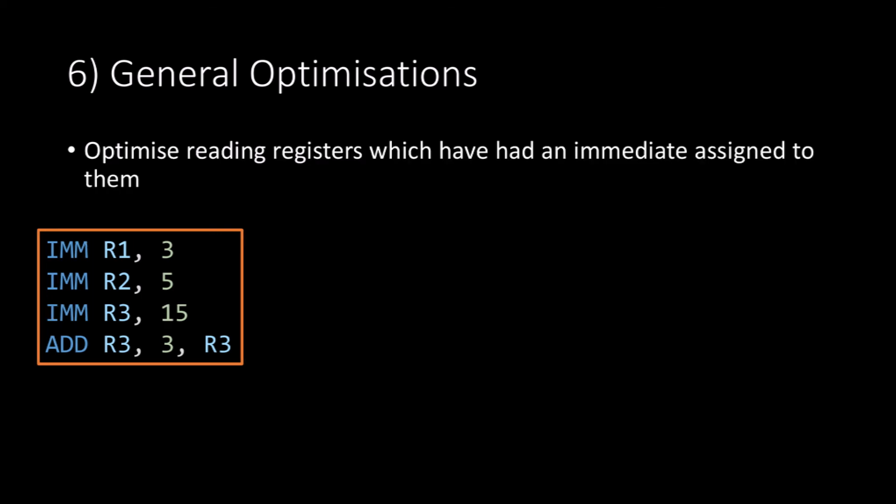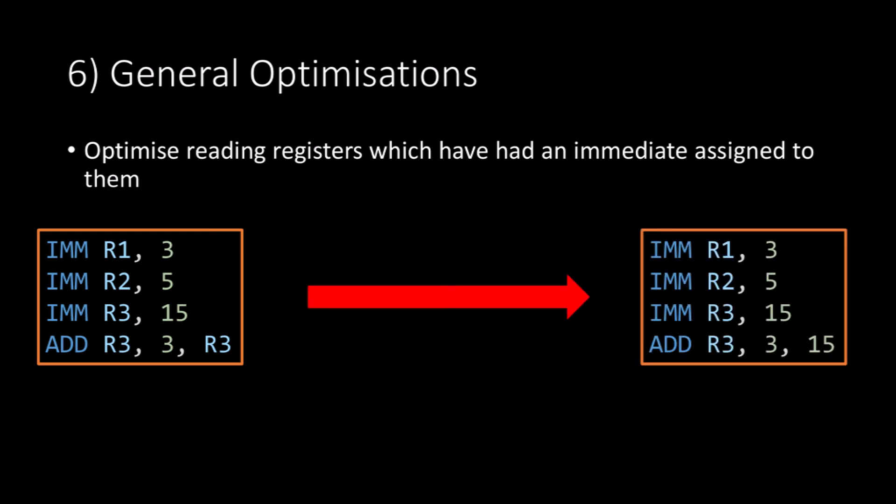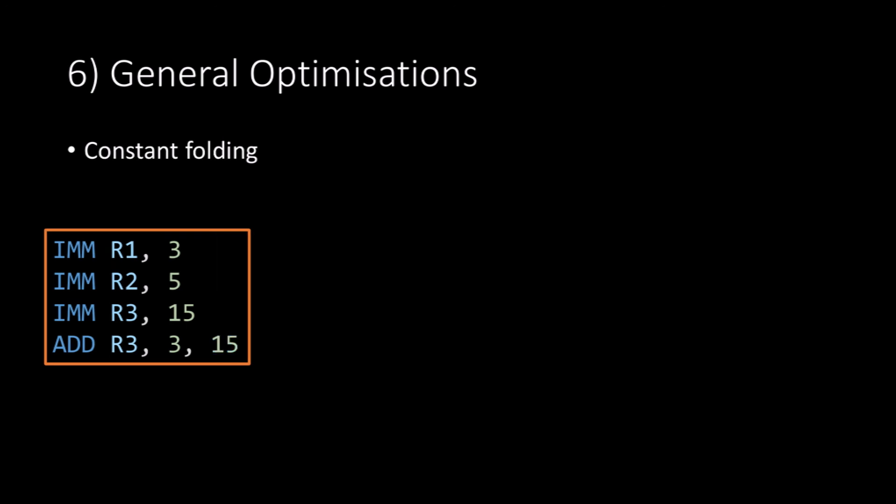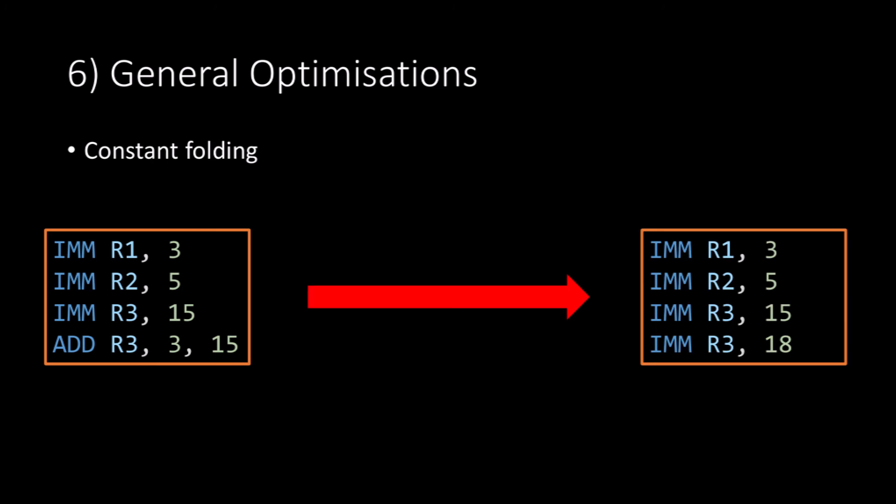Then we can apply the reading registers which have had an immediate assigned to them optimization again, and this gives us code where we've replaced reading register 3 with the immediate value of 15. Again, we can now apply the constant folding optimization. Since we are adding 3 to 15, that will equal 18, which means we can turn our code into an immediate value of 18 being assigned to register 3.